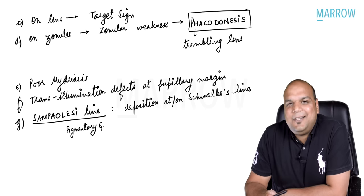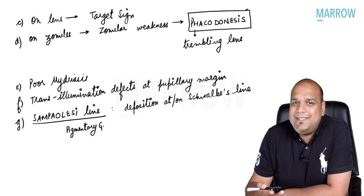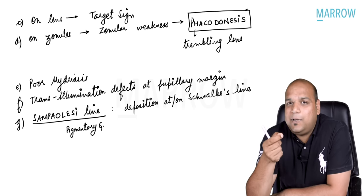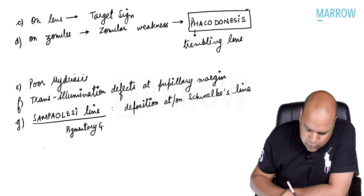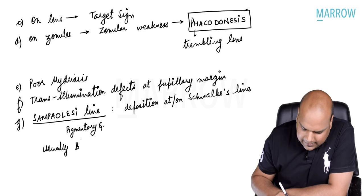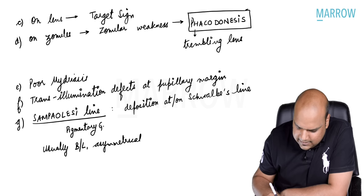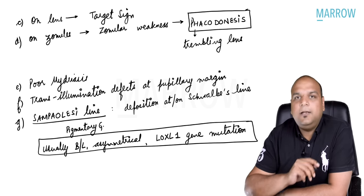So wherever fibrillary material gets deposited in the anterior segment, it produces a clinical feature. The important points to remember: SNOX at the pupillary margin, the target sign image, and pseudo-exfoliation syndrome as the most common identifiable cause of secondary open-angle glaucoma. Also remember: this is usually a bilateral condition, albeit asymmetrical, and it is due to mutation of the LOXL1 gene.